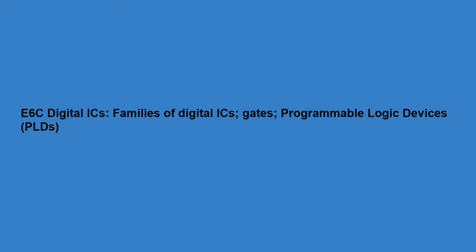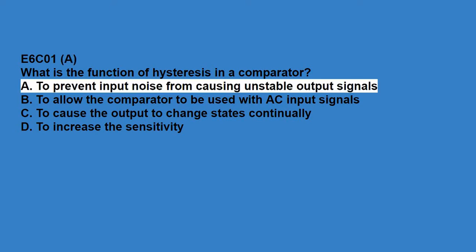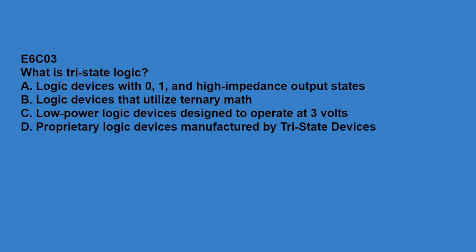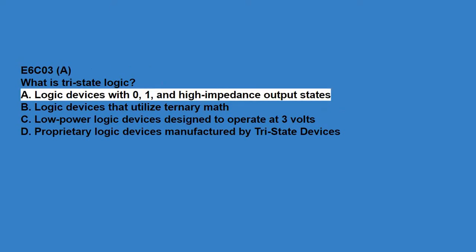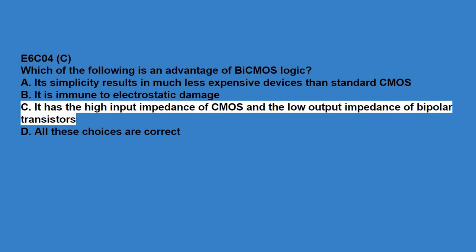E6C01: what is the function of hysteresis in a comparator? To prevent input noise from causing unstable output signals. E6C02: what happens when the level of a comparator's input signal crosses the threshold? The comparator changes its output state. E6C03: what is tri-state logic? Logic devices with 0, 1, and high impedance output states. E6C04: which of the following is an advantage of bi-CMOS logic? It has the high input impedance of CMOS and the low output impedance of bipolar transistors.